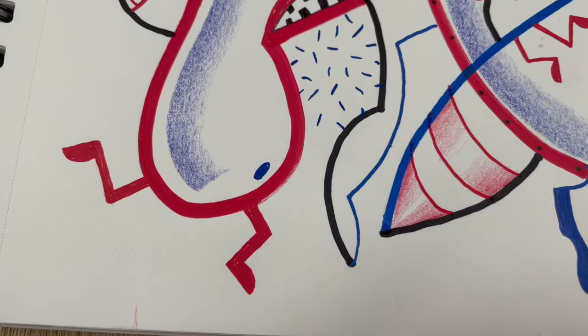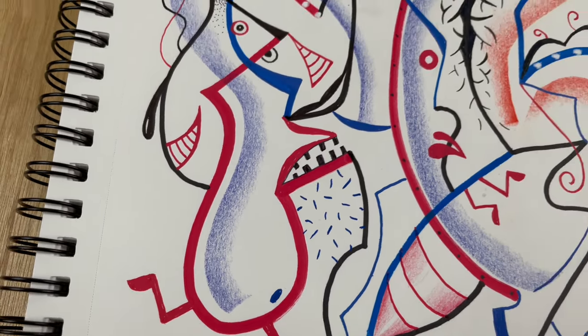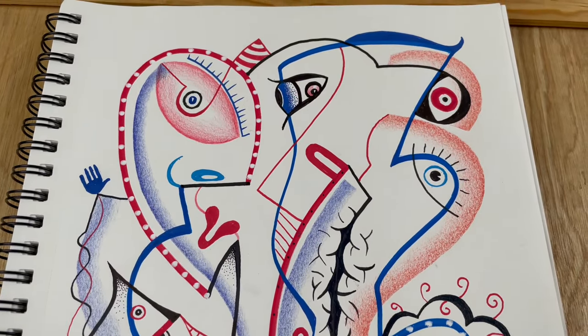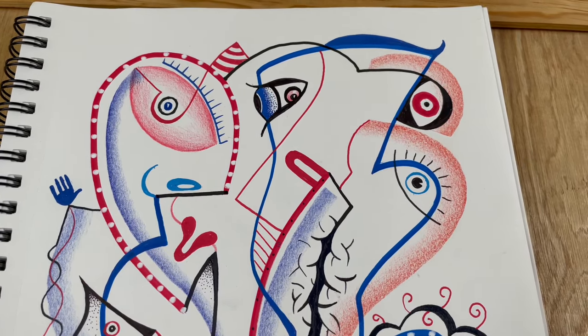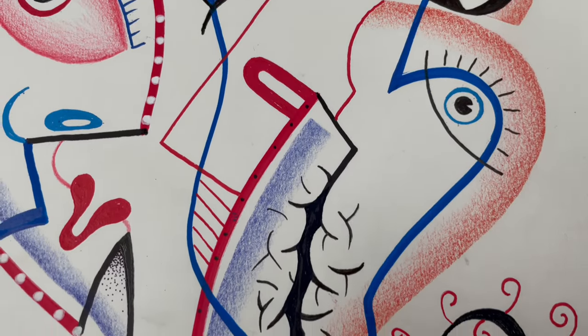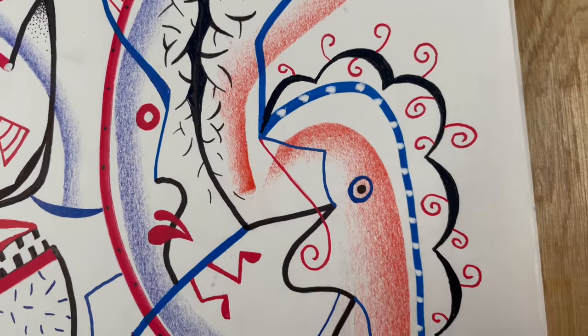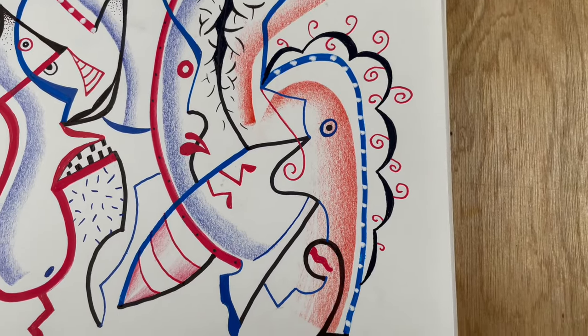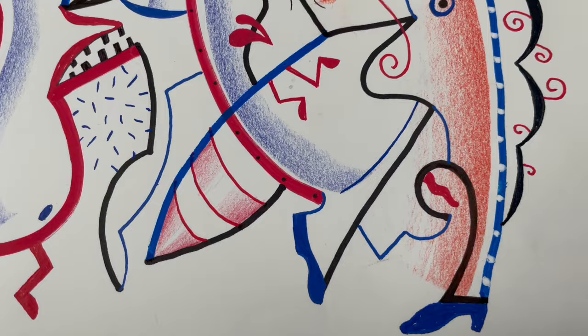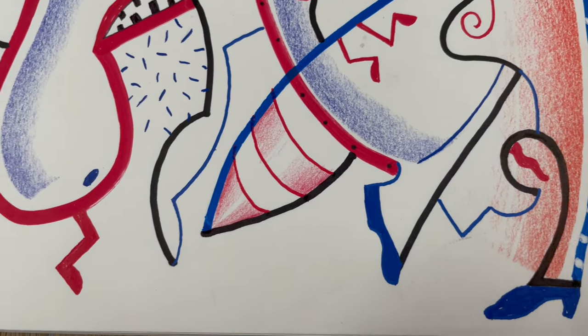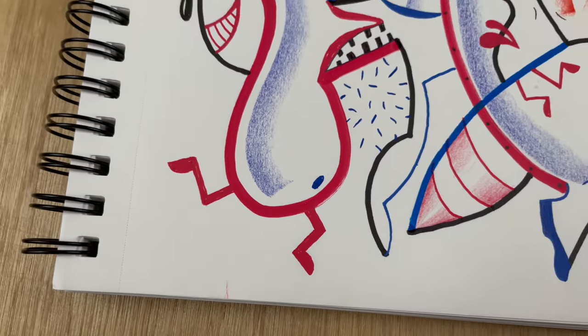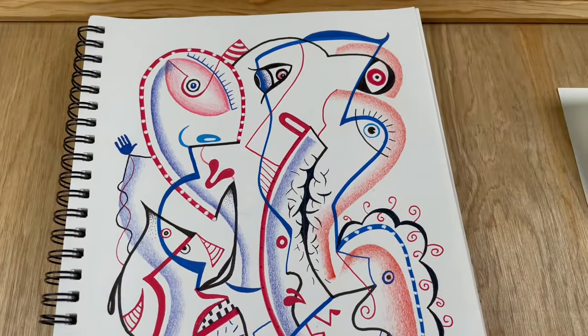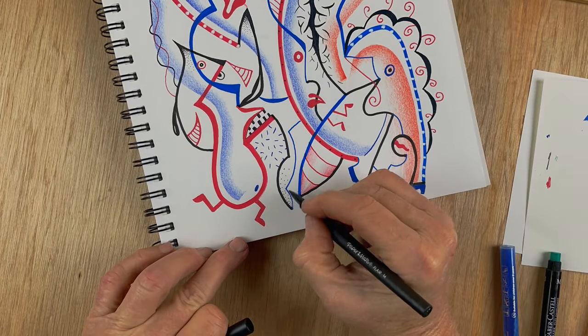People often prefer realism, partly because they think that's harder somehow, when it's exactly the opposite. Realism is the thing they teach you on the first day of art school—you just look and see and then draw and put down accurately what your eyes see. That's like art 101. Most artists, if you look at great artists like Picasso when they were 12 years old, they were painting realistically and astonishingly well too.